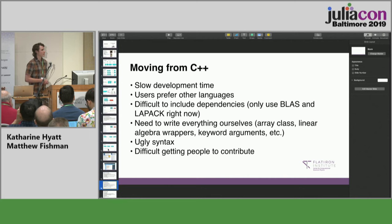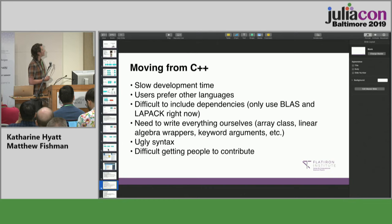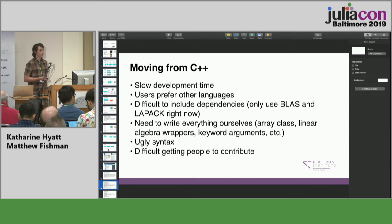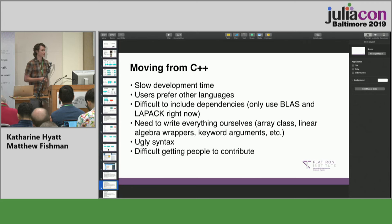The reason we're in the process of moving away from C++ — which probably anyone who's used C++ is aware of — is that development time is slow, our users don't like C++ in general but use it because our software is in C++, and it's difficult to include dependencies. Right now we only have the dependencies of BLAS and LAPACK, which required a lot of work to ensure, meaning we have to write everything ourselves: a built-in array class, all linear algebra wrappers, and a system of keyword arguments written entirely in C++. C++ also has pretty ugly syntax, and it's difficult to get people to contribute quality code.